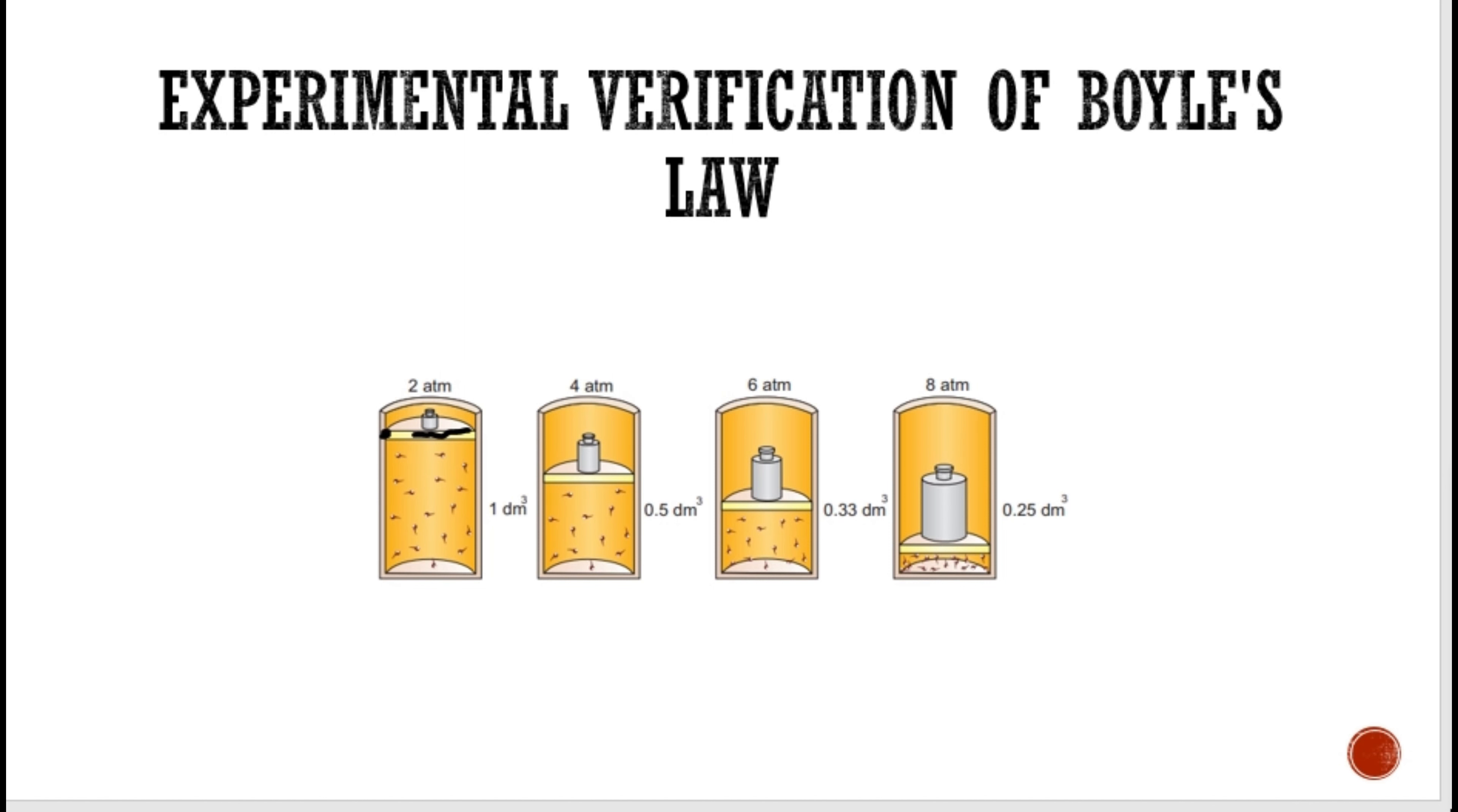On top you apply pressure of 2 atm, volume is 1 decimeter cube, and pressure is 2 atm. P1 V1 is equal to k, which becomes 2 multiply by 1 decimeter cube equals 2 atm decimeter cube.